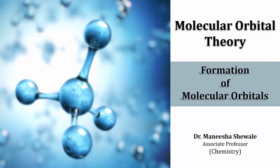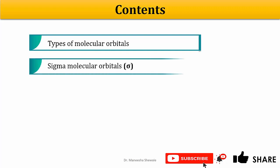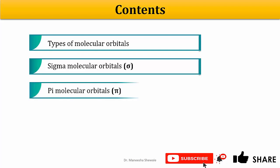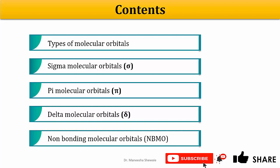Hello everyone. Welcome to another video on molecular orbital theory. Today we will discuss the formation of molecular orbitals. First we begin with the different types of molecular orbitals — the sigma, pi and delta. We will discuss sigma molecular orbitals first, then pi molecular orbitals, delta molecular orbitals, and finally we will understand non-bonding molecular orbitals.